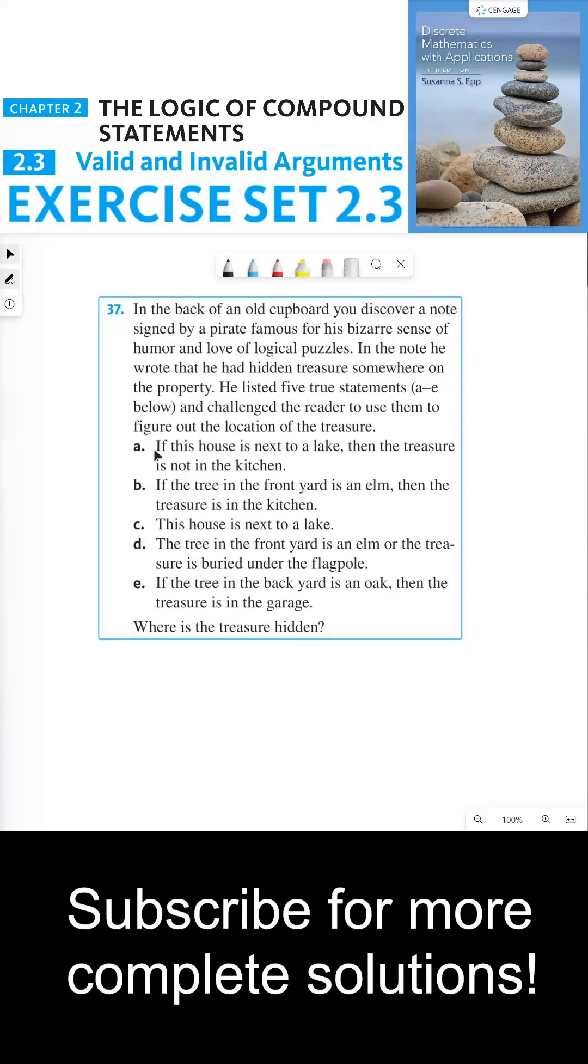If you notice, part A, part B, and part E are all implications. And implications, unless they're clearly false, don't really tell us whether the component statements within each statement form is true or false. However, if you look at part C, we can say that this house is next to a lake.